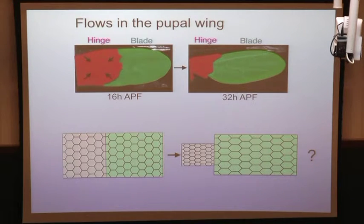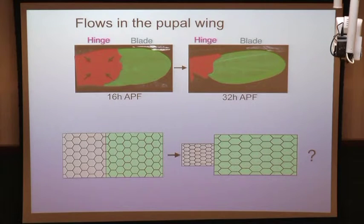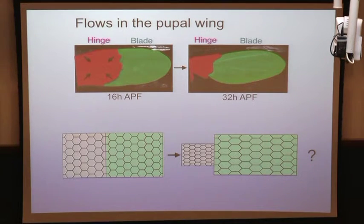When you look at this movie, the picture seems straightforward: the hinge contracts, pulls on the blade, and therefore the blade elongates. If you look at cells inside the blade, you might expect each cell elongates the same way as the tissue. The question is whether this picture is correct or whether more complicated things are happening.